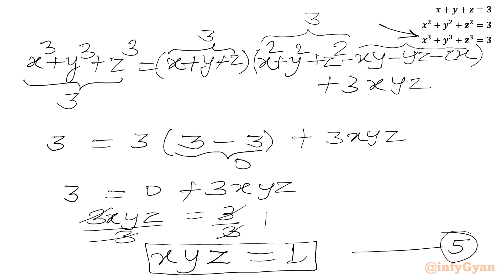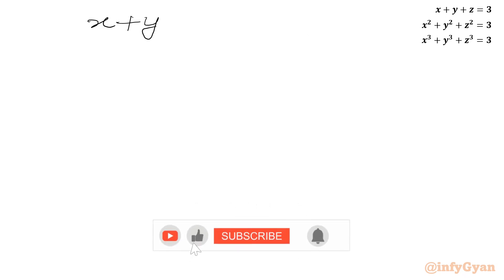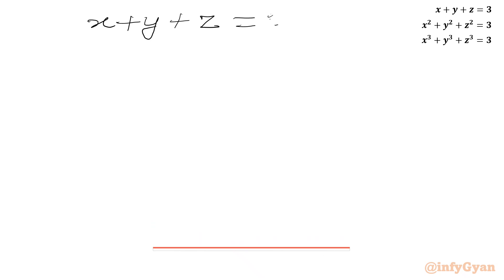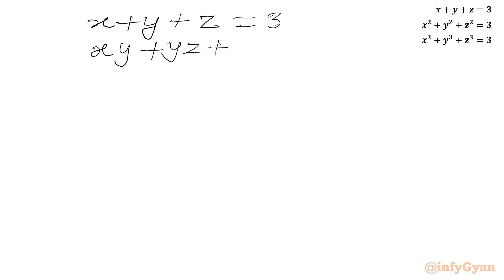Now I will write 3 equations out of the 5 equations. Equation 1: x plus y plus z equals 3. Equation 4: xy plus yz plus zx equals 3. And equation 5: x times y times z equals 1.